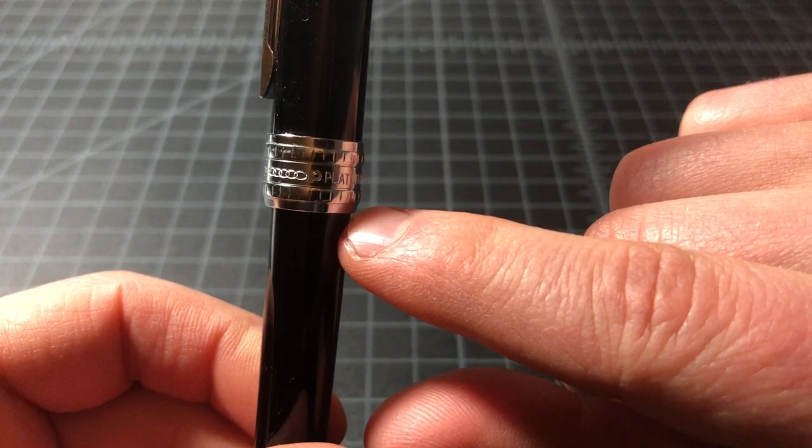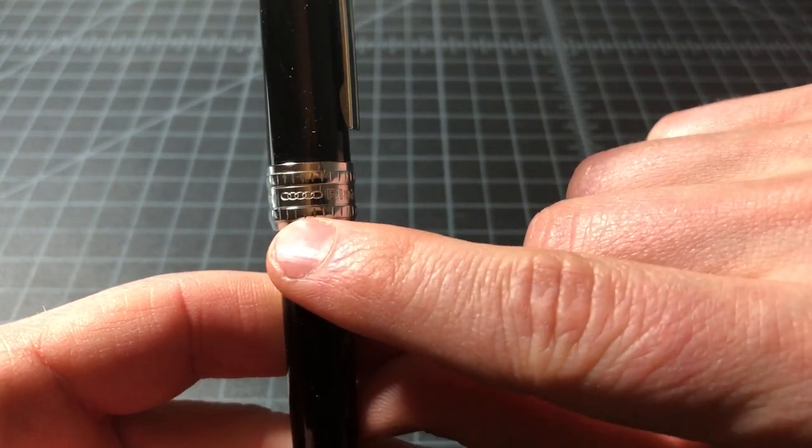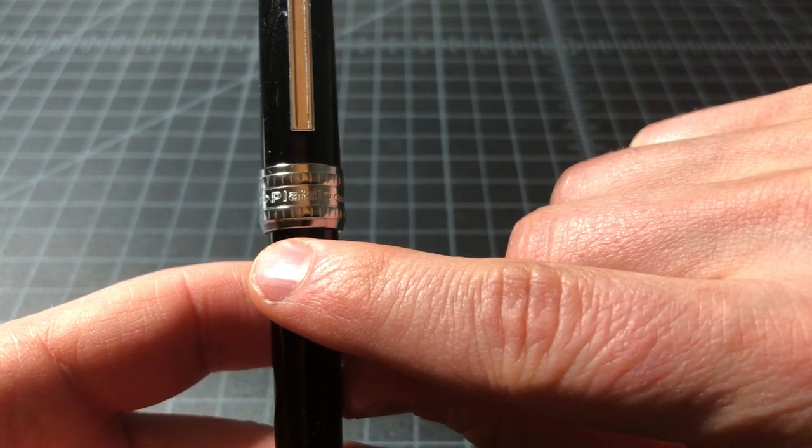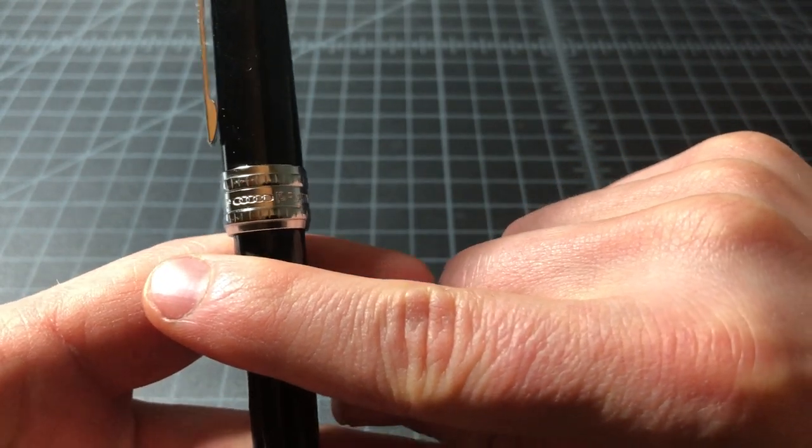It does have a pretty nice band here. It says Platinum Japan and some rings, kind of like an Audi type deal. And then you see the name, the Plaisir, P-L-A-I-S-I-R, more rings.